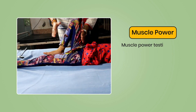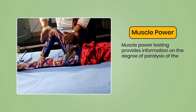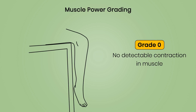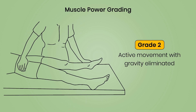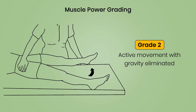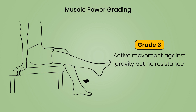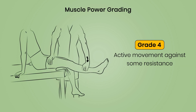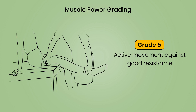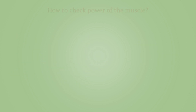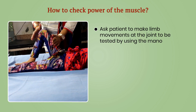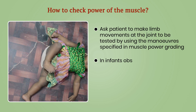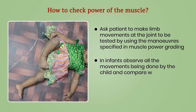Muscle power testing provides information on the degree of paralysis of the muscle or muscle group. Muscle power grades: Grade 0 — no detectable contraction; Grade 1 — flicker of contraction; Grade 2 — active movement with gravity eliminated; Grade 3 — active movement against gravity but no resistance; Grade 4 — active movement against some resistance; Grade 5 — active movement against good resistance. In infants, observe all movements and compare with other limbs.